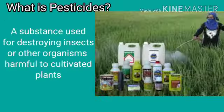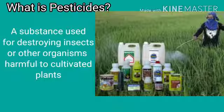Let us understand what is a pesticide. A substance used for destroying insects or other organisms that are harmful to cultivated plants is called a pesticide.